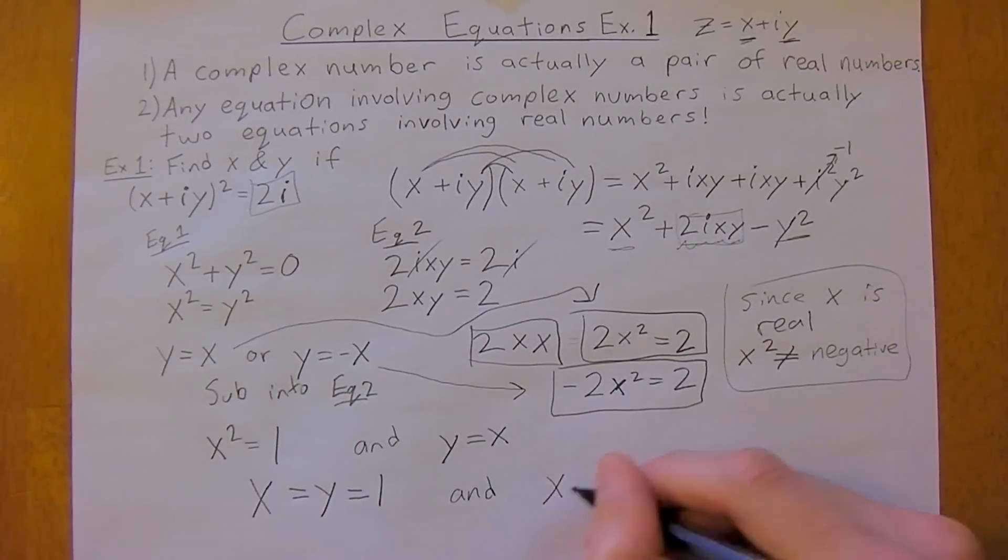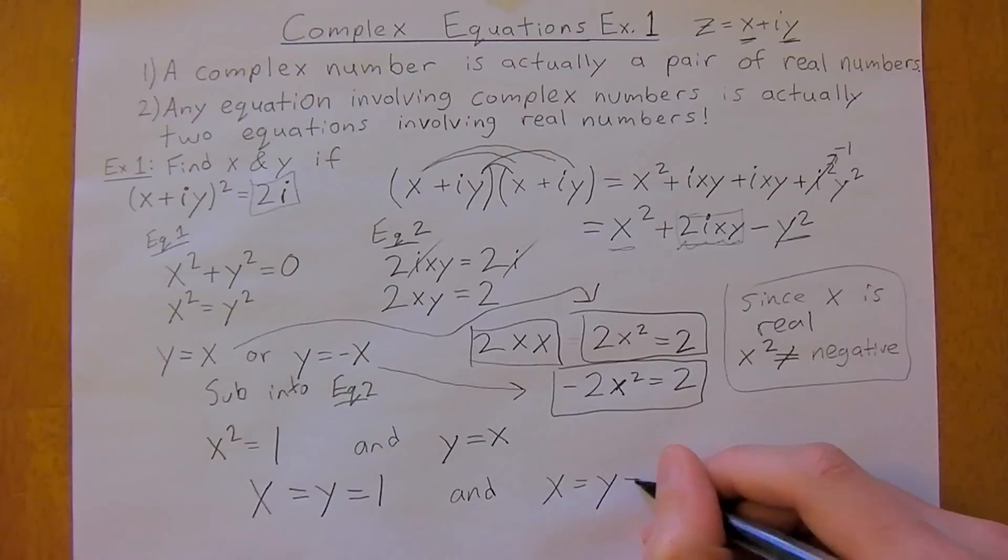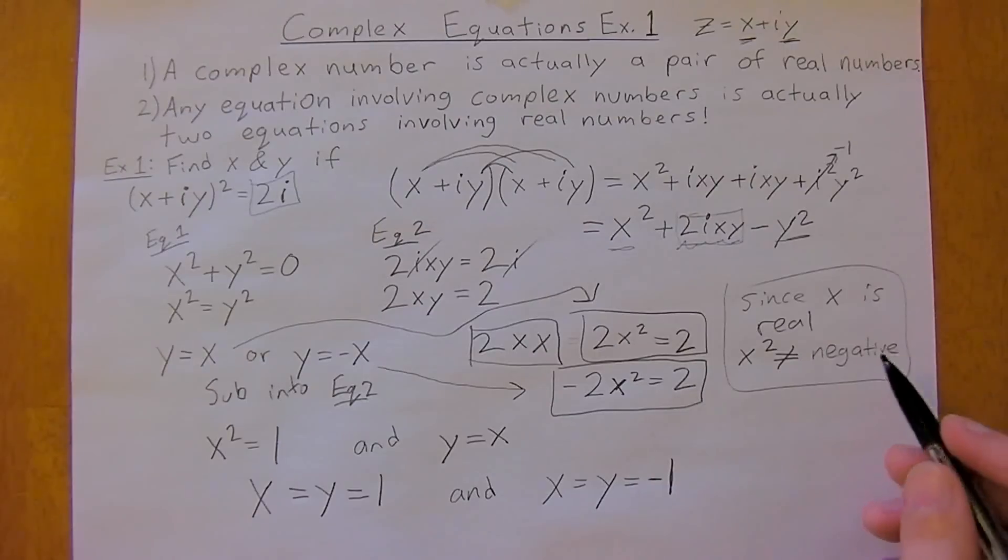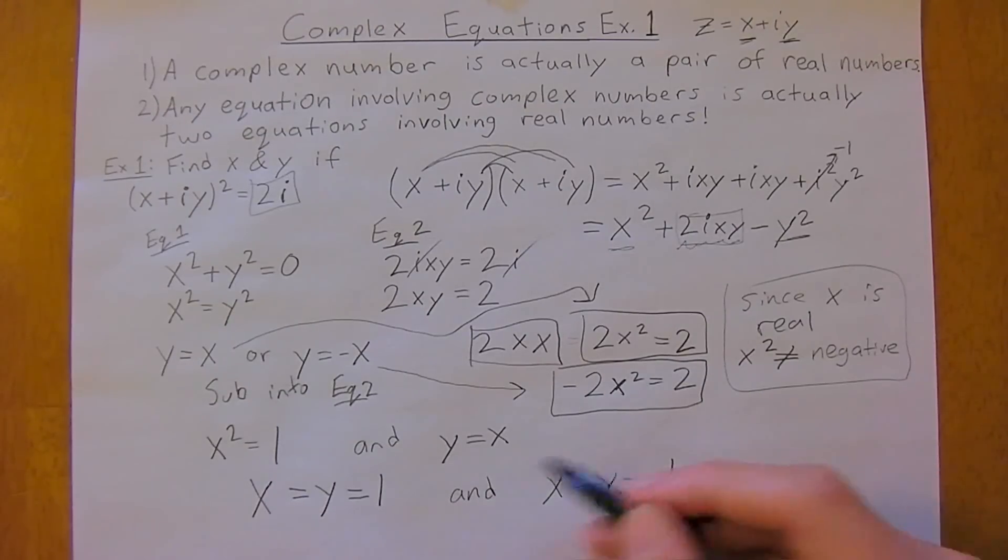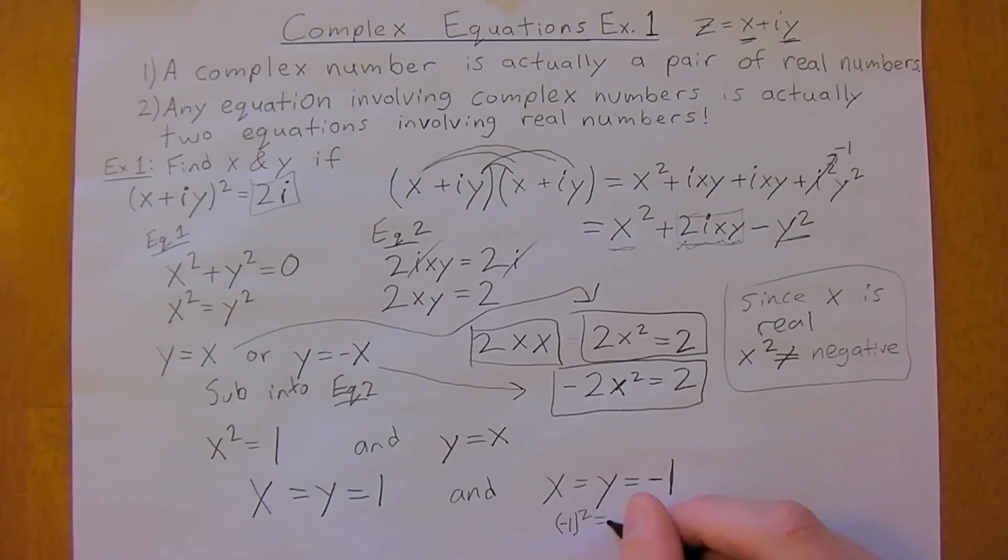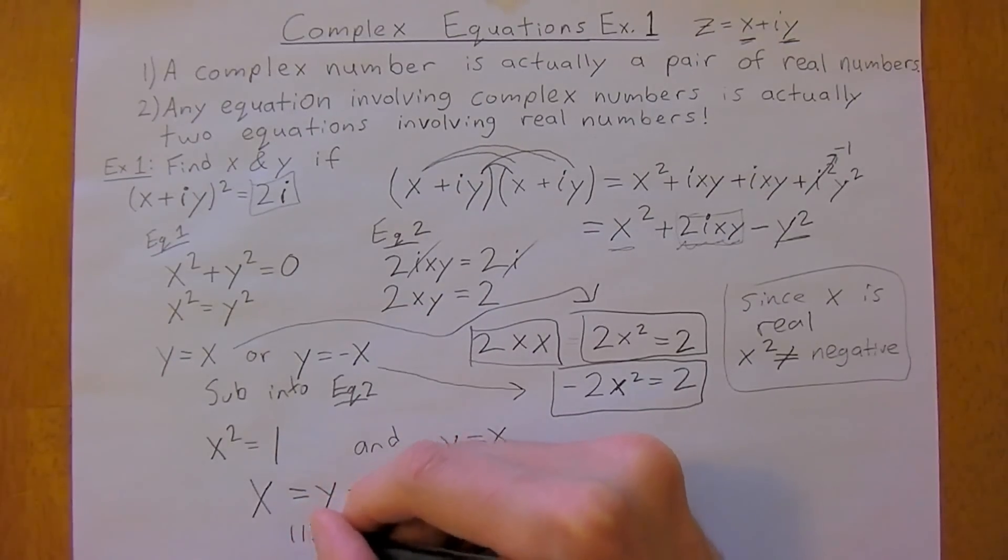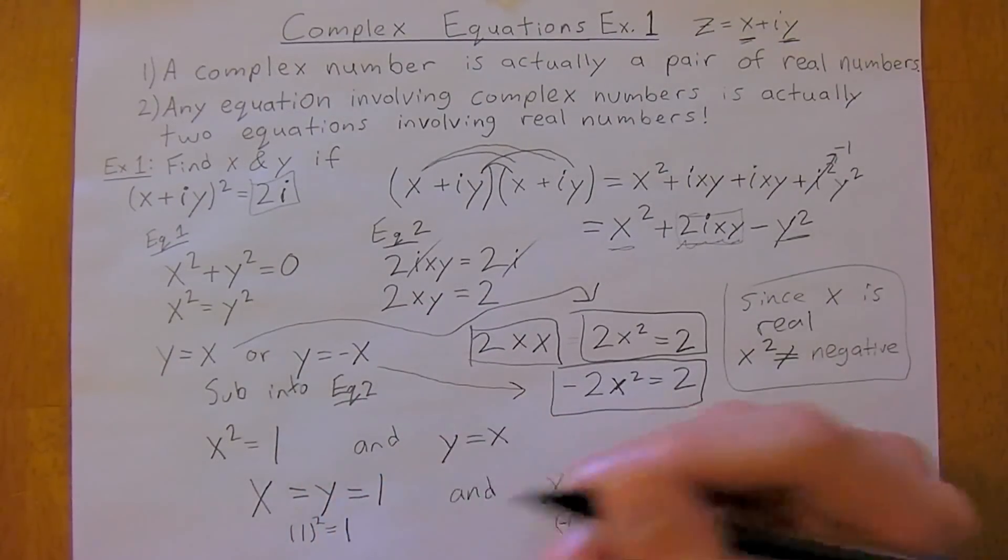And x equals y equals negative 1. X squared can't be negative, but in this case where x equals y equals negative 1, we'll recall that negative 1 squared is still just 1. And 1 squared is still just 1.